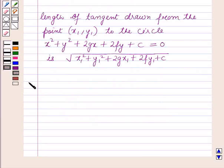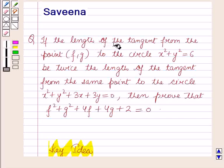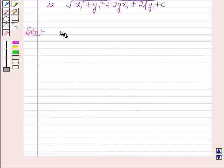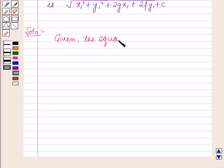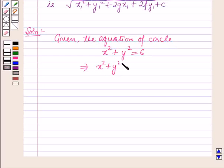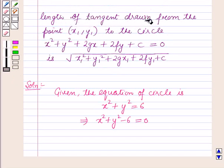Now we will start with the solution. First of all we will find the length of the tangent from the point (f, g) to the first circle. The equation of the circle is x² + y² = 6, which implies x² + y² − 6 = 0. We can find the length of the tangent from a point to a circle by using this formula.